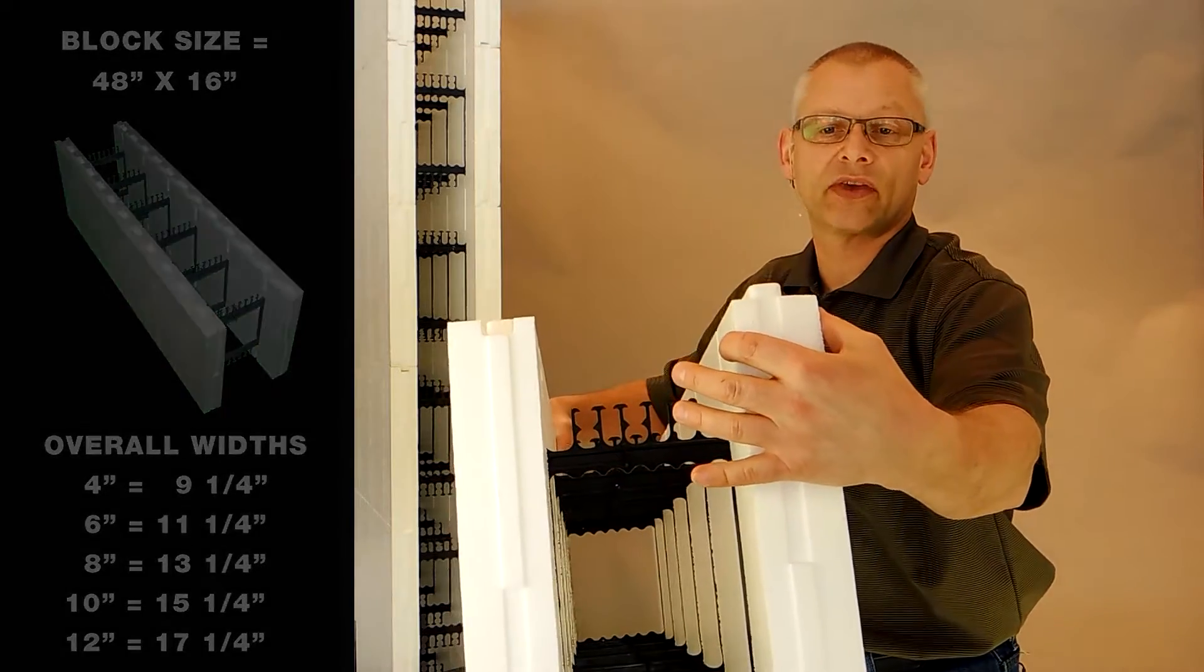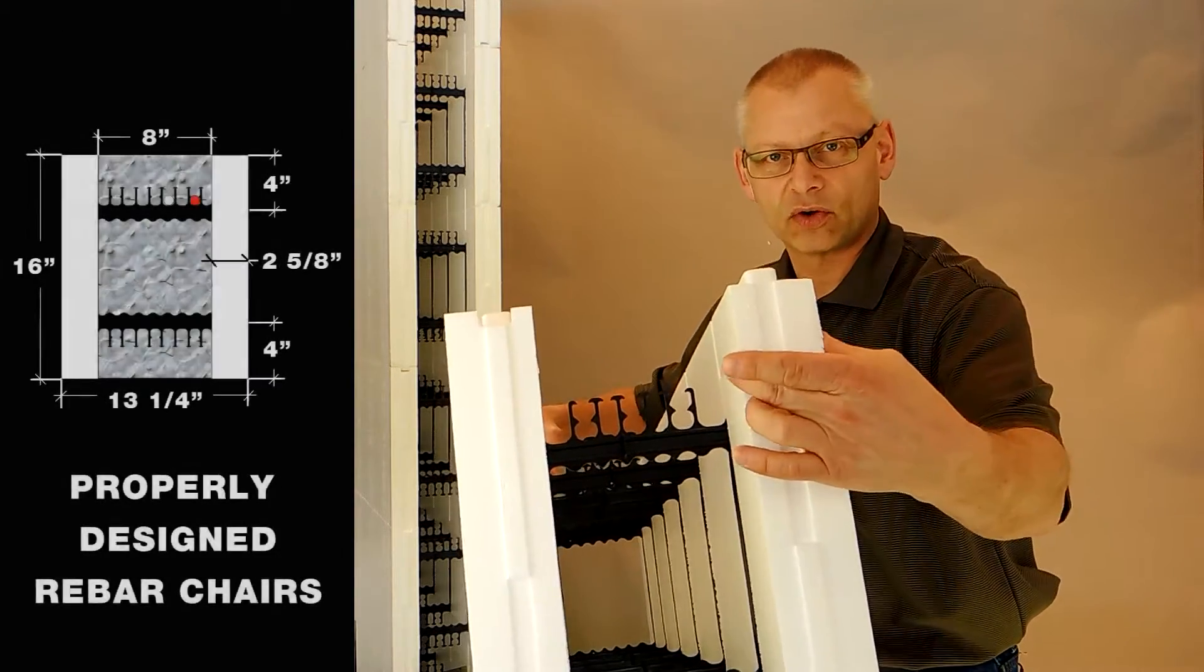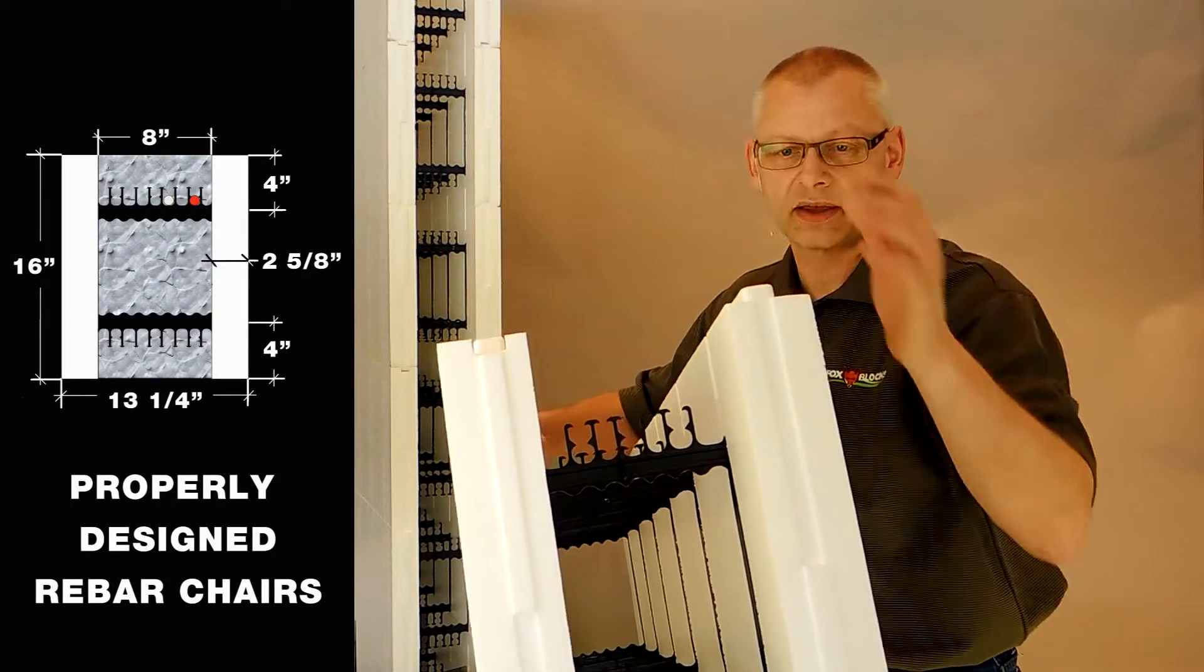The foam is two and five-eighths inches thick on both sides—that goes for all our products. So you add that up, that's five and a quarter inches. If you add five and a quarter to the concrete volume you're going to use, that's the outside dimension of the block.